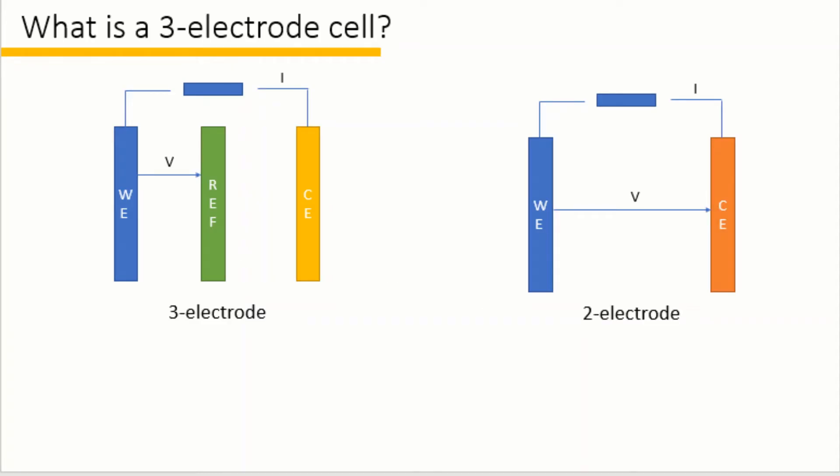In an eCAMP lab, you always hear like three-electrode cell, two-electrode cell. So what exactly is the difference between a three-electrode cell and a two-electrode cell? Let's first look at a three-electrode cell.